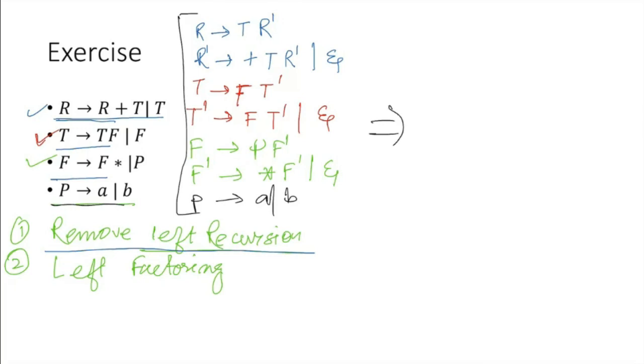Just check out whether there are two production rules starting with same non-terminal, same terminal. Is it happening anywhere? It is not happening anywhere. So there is no left factoring issue. This will be our answer.